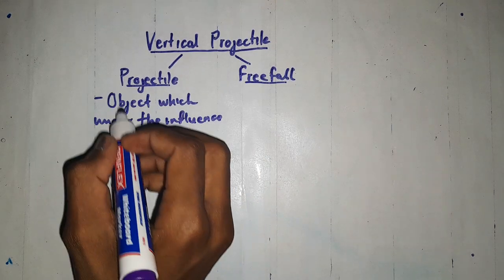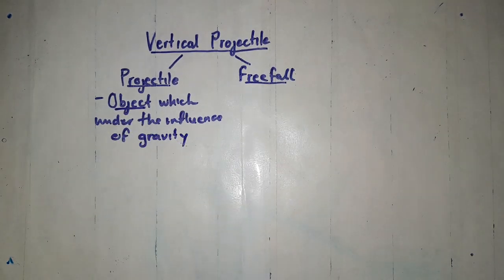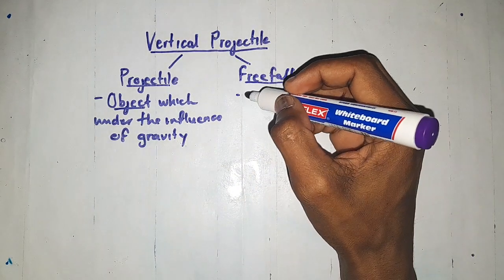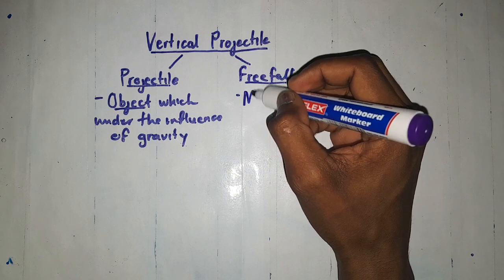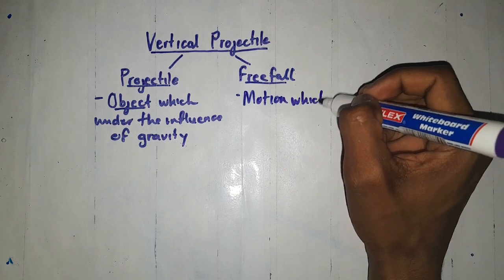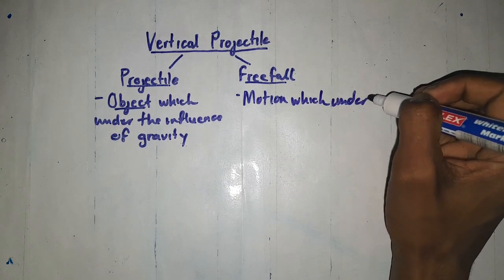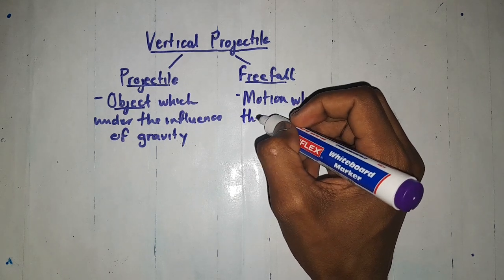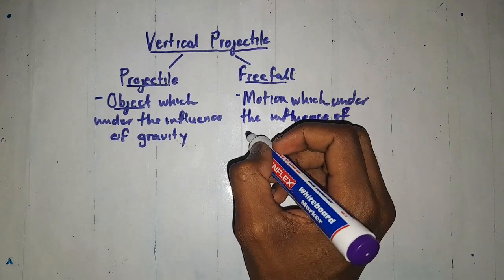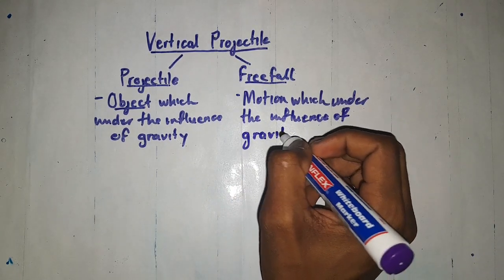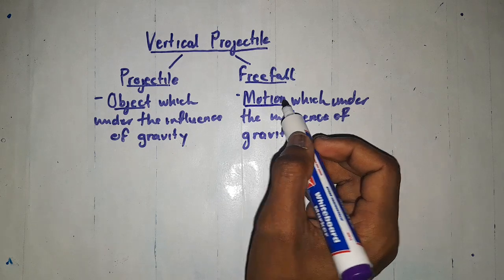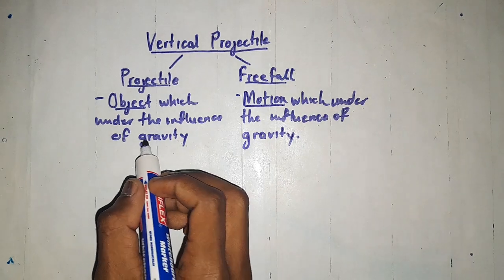If I were to define the concept of projectile, I would say it is an object which is under the influence of gravity. As for freefall, it has to do with motion which is under the influence of gravity. Both terms include the term gravity.